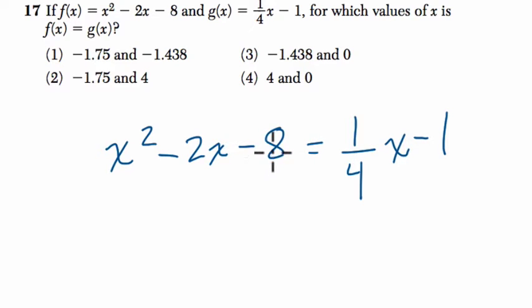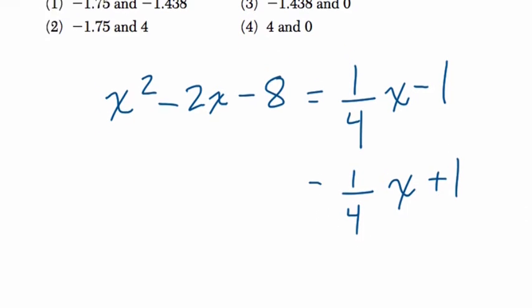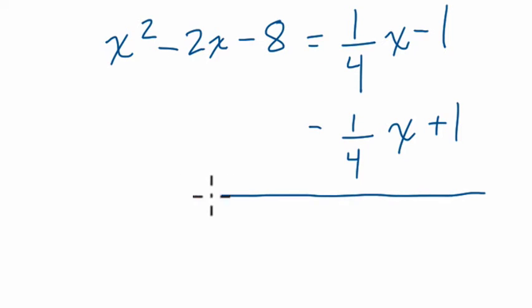So to find that, set the expressions equal to each other and solve for x. What I'm going to do is subtract one-fourth x from both sides and add 1. You don't have to do this first, it doesn't need to be done that way, but it helps me. This gives me 0 on the right side.